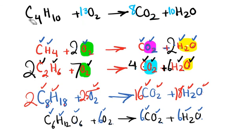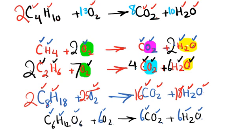Double check all elements: carbon — two times four equals eight on each side ✓; hydrogen — two times ten equals twenty, ten times two equals twenty ✓; oxygen — thirteen times two equals twenty-six, sixteen plus ten equals twenty-six ✓. This covers combustion reactions showing how to balance equations with a variety of carbon and hydrogen atoms.